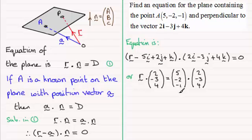If we work this out, the scalar product here, we've got 5 times 2 which is 10, minus 2 times minus 3 which is 6, and minus 1 times 4 is minus 4. This comes to 12. So you've got the form r dotted with this normal here equals 12.